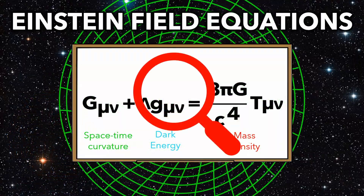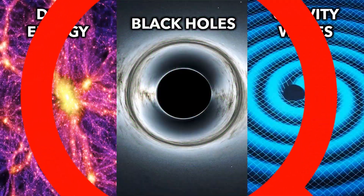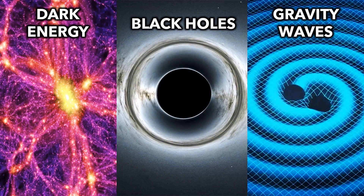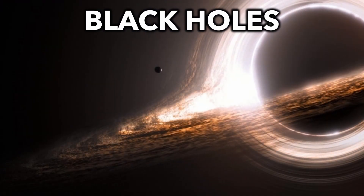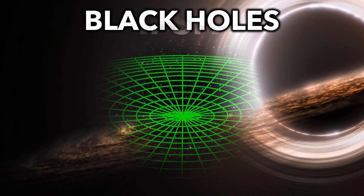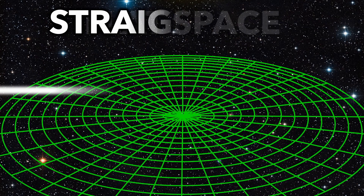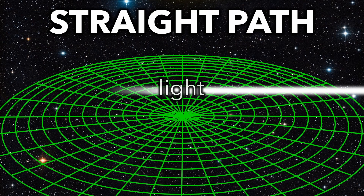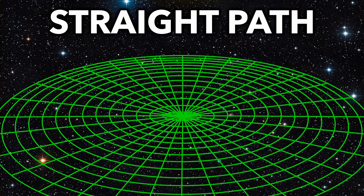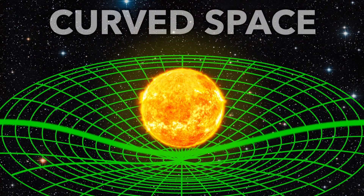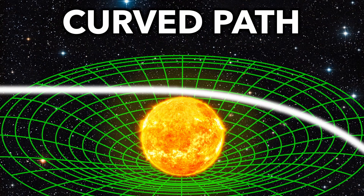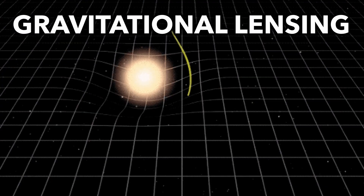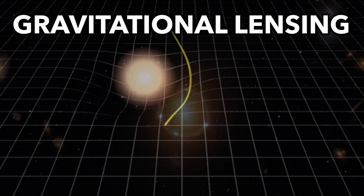But hidden in his equations were some incredible predictions, including black holes. Here's how. In flat space, with no gravity, light takes a straight path. But in curved space, light takes a curved path, bending around heavy objects like stars.